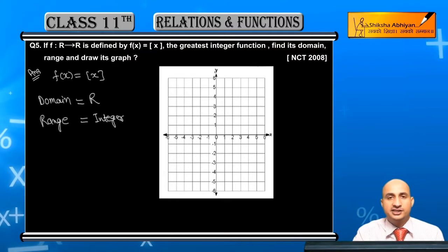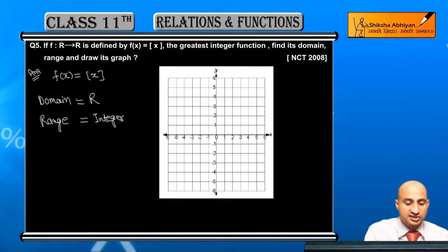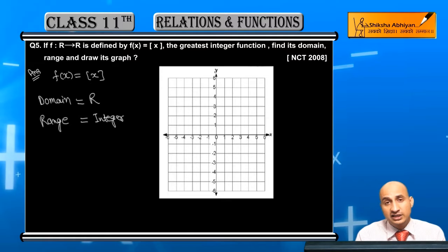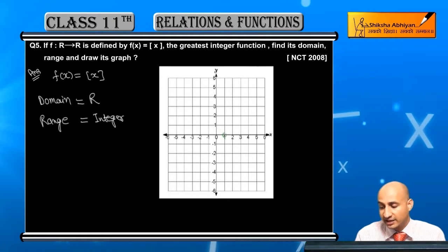Now the graph. For the graph, first of all, if you have values between 0 and 1, the output will be 0. So I will write this here, and here it will be like this.